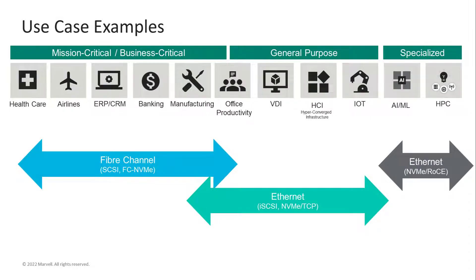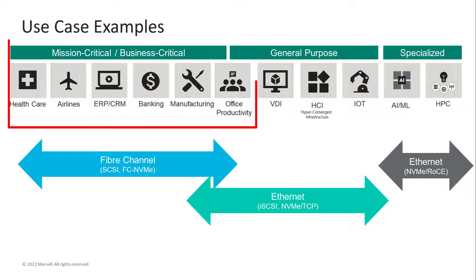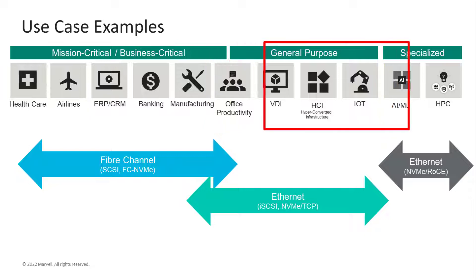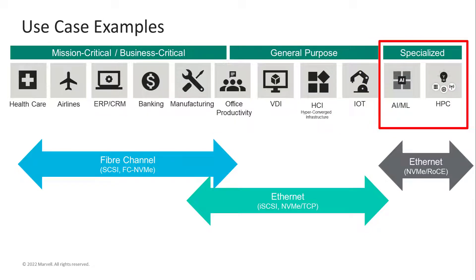Here's how we look at making a choice based on customer use cases and applications. Use cases like healthcare, financial, and transportation are all mission-critical applications best suited for the high reliability and security of Fibre Channel. General-purpose applications like Office Productivity, VDI, and HCI are the kind of use cases for Ethernet. And for specialized use cases like artificial intelligence, machine learning, or HPC high-performance computing, using Ethernet with NVMe over RoCE might be an approach to consider.